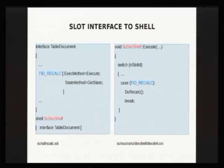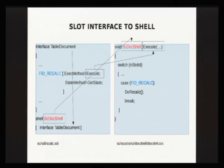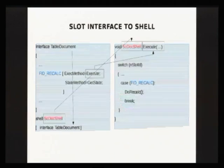Now we finally get to the meat. Where is the code carrying out the UI work? Where's the C++ class and method executing something when I click on a toolbar button? This is the interface organized into the shell. The doc shell is the name of the class — so if you're looking for C++ code implementing a particular UI function, look for this class. There are two types of methods: the execute method and the state method.